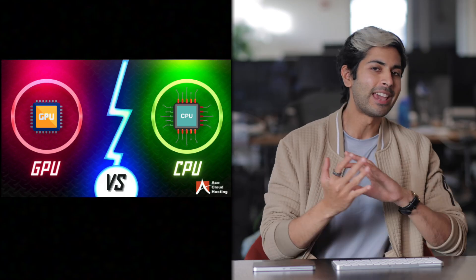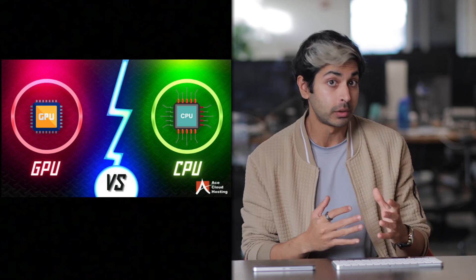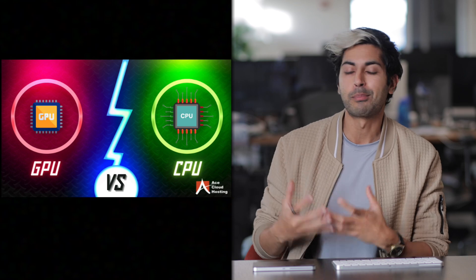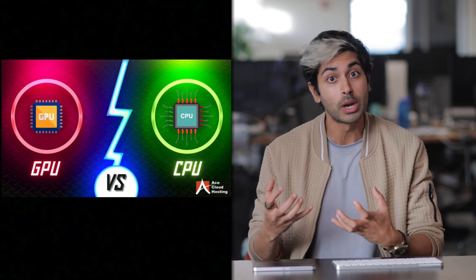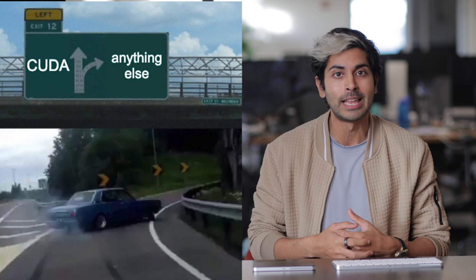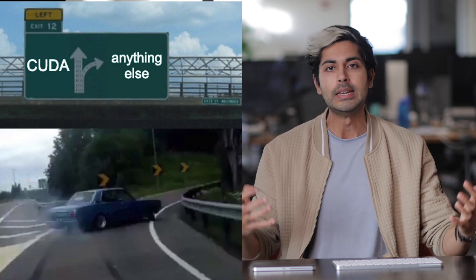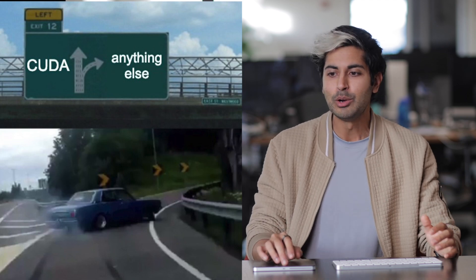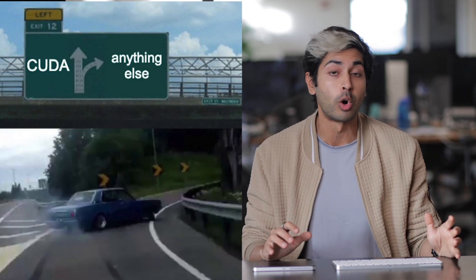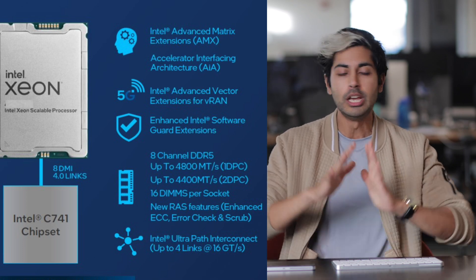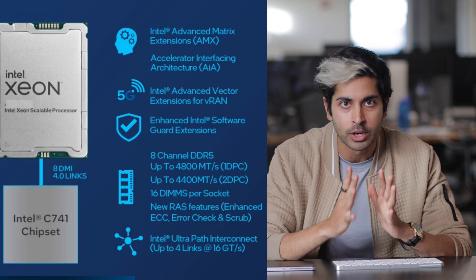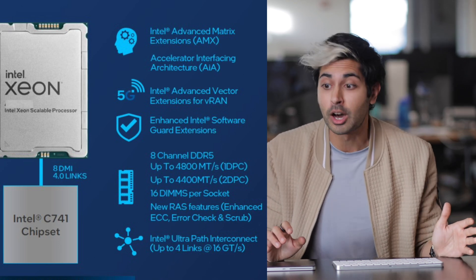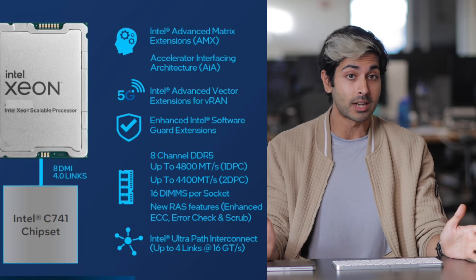NVIDIA GPUs can't really support end-to-end workflows in the same way that Intel can, because you can't do certain operations in CUDA. CUDA is NVIDIA's GPU programming language — it's responsible for allowing matrix operations to run in parallel across their systems. With Intel Xeon, it's the only CPU in the world with built-in AI acceleration, and it outperforms NVIDIA's A100 on some of the most popular ML algorithms, which is awesome.